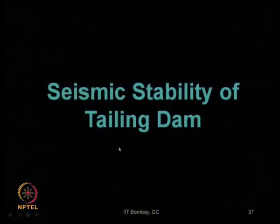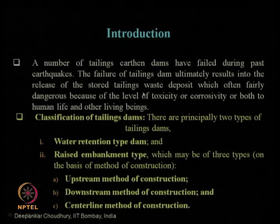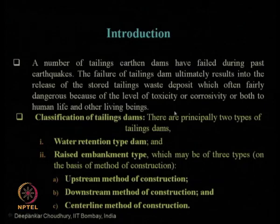Now let us come to the subtopic of seismic stability of tailing dams. First, what is a tailing dam or earthen dam? A number of tailing earthen dams have failed during past earthquakes. Failure of a tailing dam results in the release of stored tailing materials or waste deposits, which are often dangerous due to their toxicity or corrosivity. If an earthen dam fails, there is huge calamity for those living downstream — everything gets washed out.